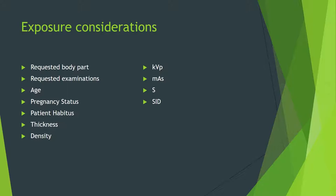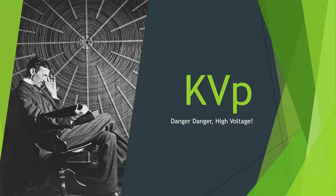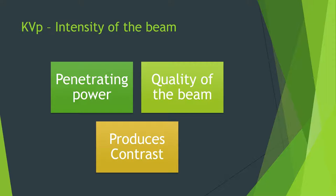What we mean by energy of rays is the kilovoltage potential. KVP is basically the intensity of the beam. An analogy I've heard is that KVP is the speed of the bullet — or more accurately, it relates to the ability of X-ray photons to penetrate a medium. As they penetrate or pass through a medium, they become attenuated — they deposit energy into the patient. Whether or not they pass out of a patient depends on whether they have sufficient energy to do so.